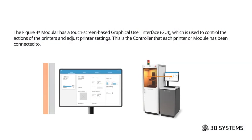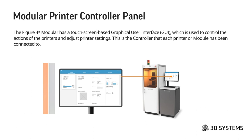Now we're going to look at the modular printer GUI, which is on the modular printer controller panel. In the modular system you'll have a work cell or controller with a large touch screen — this is how you control and interact with your system. There is a very detailed link in the user guide that will walk through these things, and it's strongly suggested to go through that when you get ready to run your modular system.